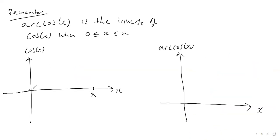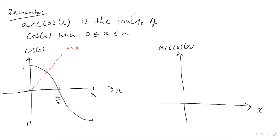Now, how about the arccos graph? If we draw a sketch of cos between zero and pi — remember arccos is the inverse of cos strictly between zero and pi — the cos graph between zero and pi has pi over two in the middle, then pi, with y values of one down to minus one. Reflecting this in the y equals x line, the old y values become the new x values.